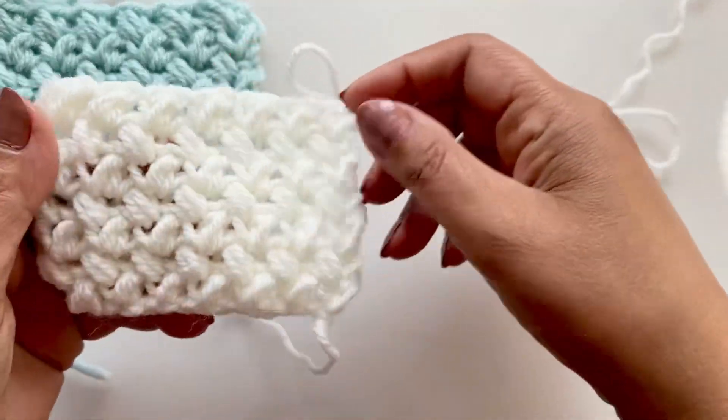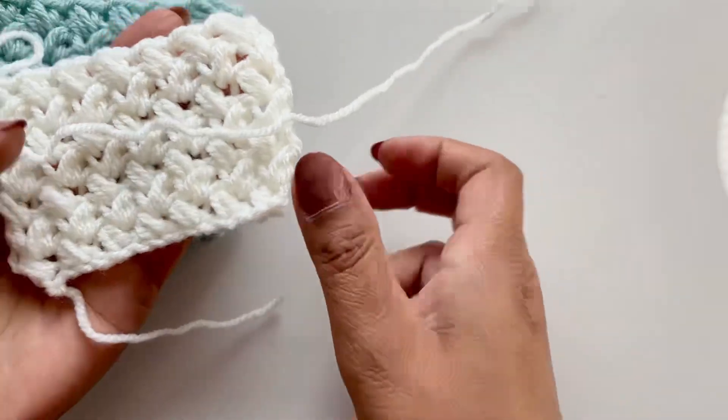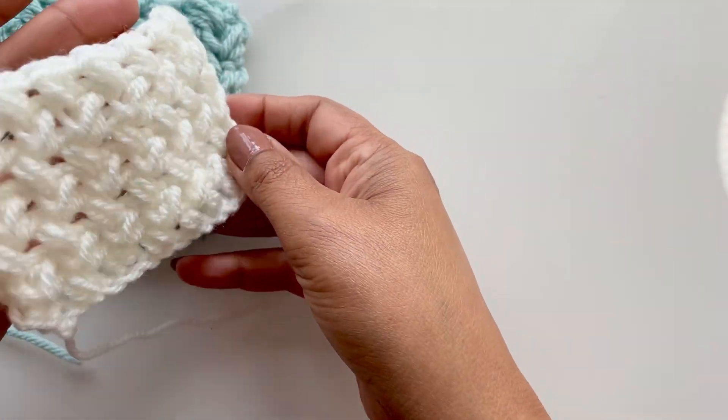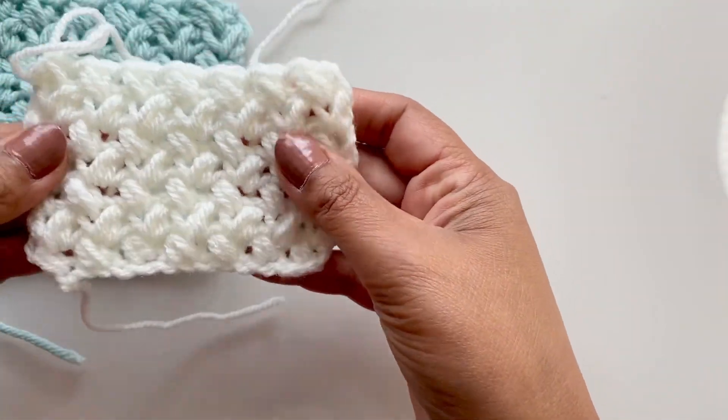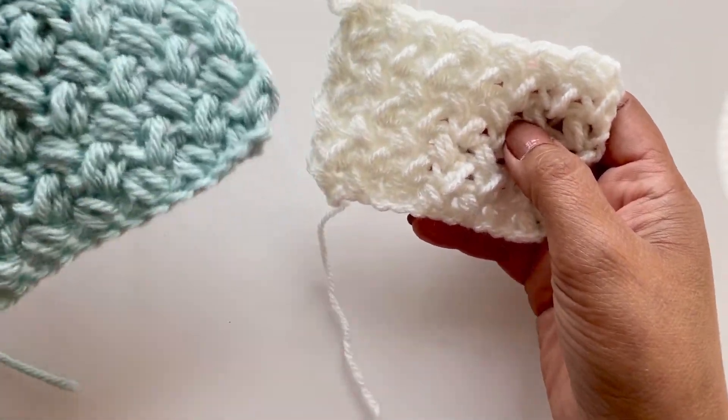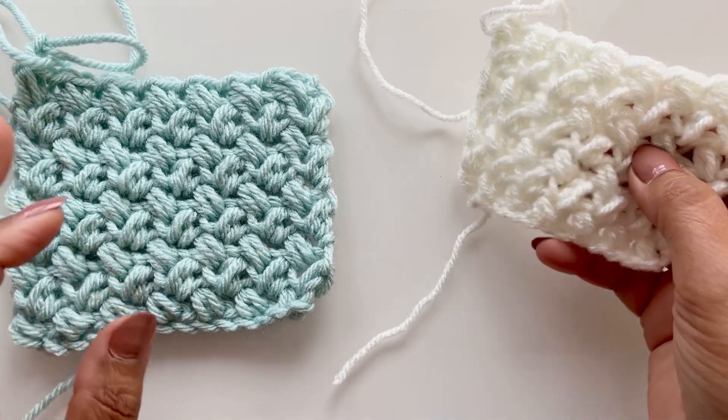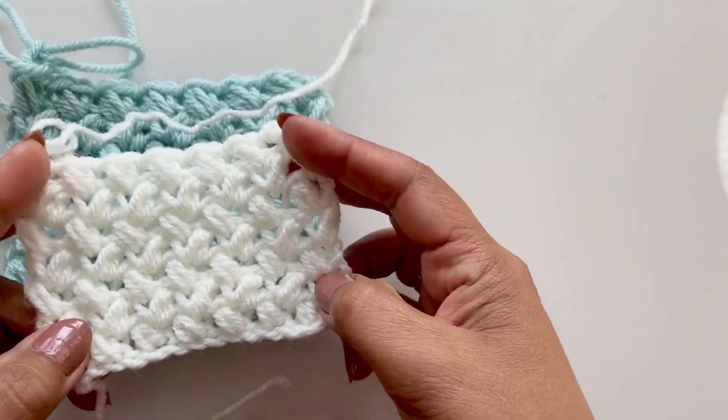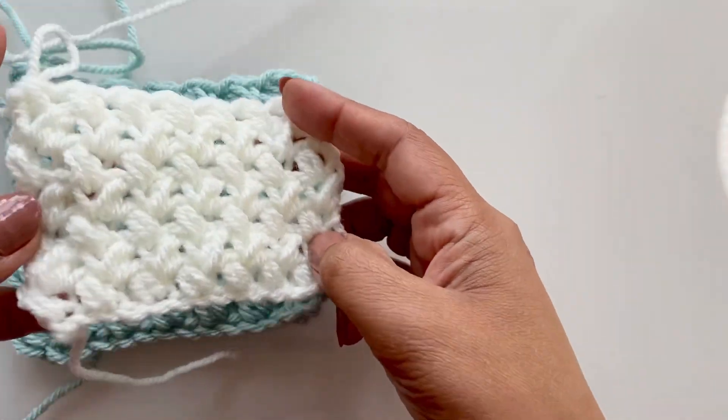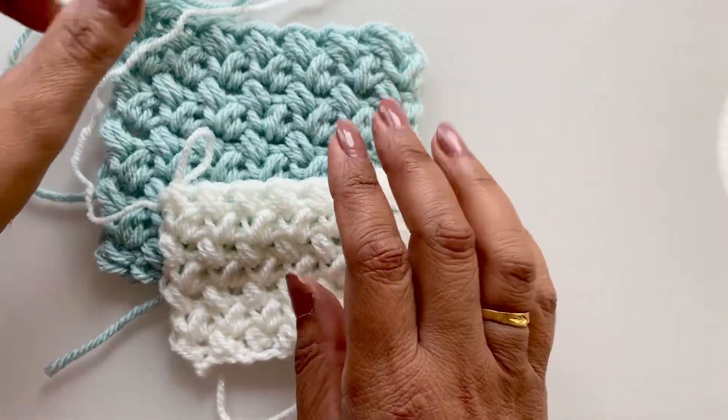But I want to show you in a normal DK yarn with a 4mm crochet hook, how pretty that looks as well. So just for the tutorial purposes, I wanted to show you a large one and what it would look in a normal lightweight yarn as well. This is great for baby blankets and it's great for scarves, any projects.